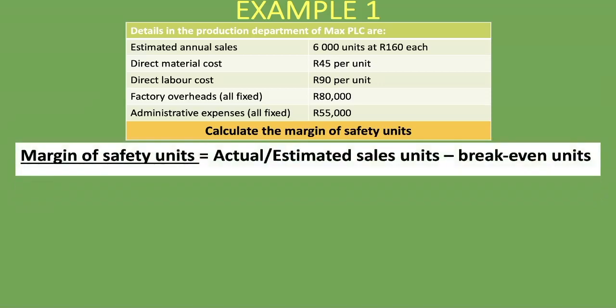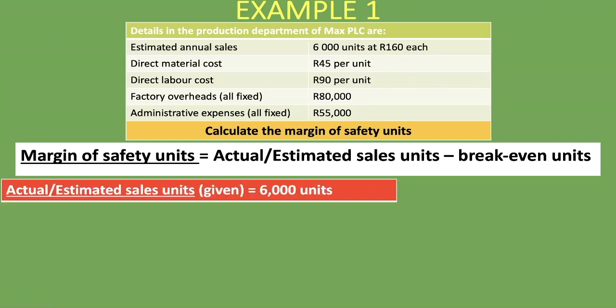What is our formula? It's the actual or estimated sales units minus the break-even units. Now let's calculate these two. Firstly, the actual or estimated sales units is already given — estimated annual sales: 6,000 units at 160 rand each. So we have the 6,000 units as the estimated sales units. That one is already given, which makes our work easier.